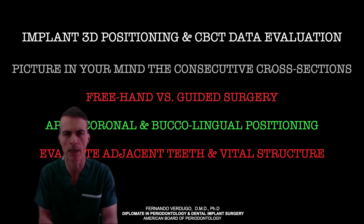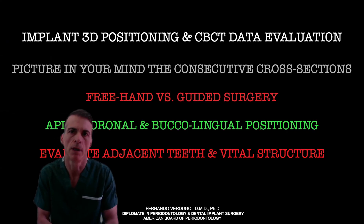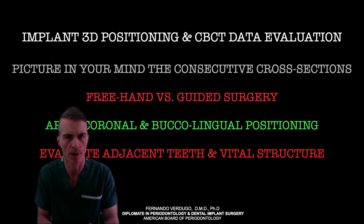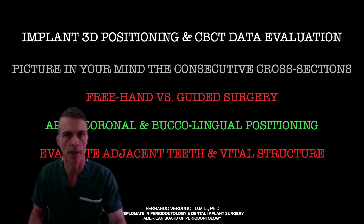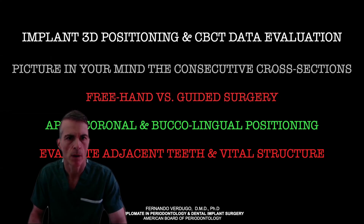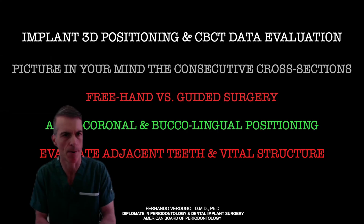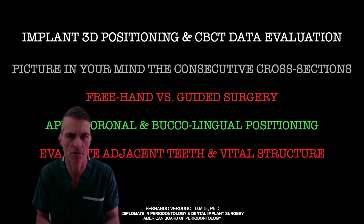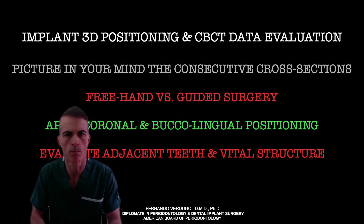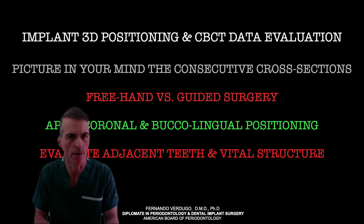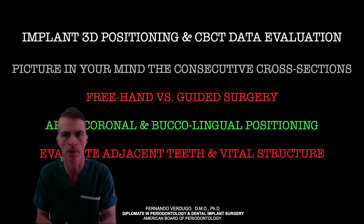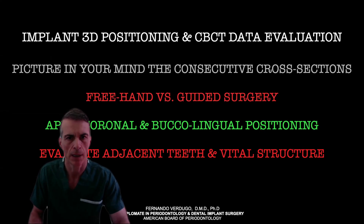Wrapping up: 3D implant positioning is key. Together with CBCT data evaluation, you want to picture in your mind the recipient site and take individual measurements of each cross-section to give you a better picture prior to performing your surgery. Regarding freehand versus guided surgery: if you are an experienced operator, you can definitely do most single units freehand. When dealing with multiple units, multiple missing teeth, and full mouth rehabs, guided surgery with a surgical stent should be used to place the implants precisely where the restorative dentist needs them.